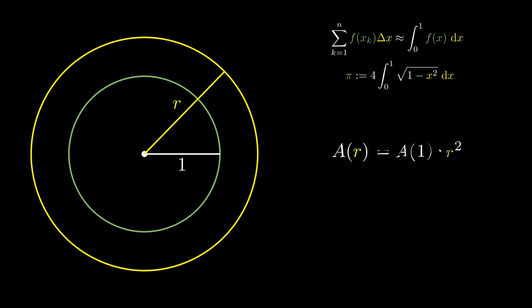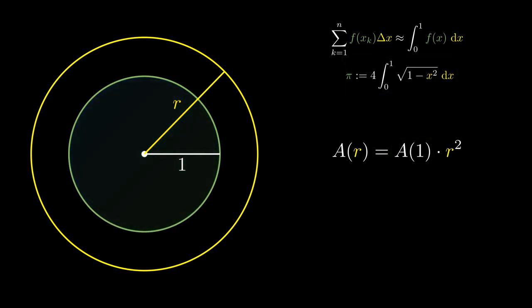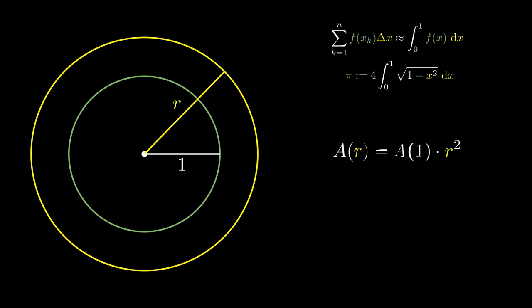But A(1) is by definition the area of a unit circle, which equals pi. This gives us the formula for the area of a general circle with radius r, which is πr².